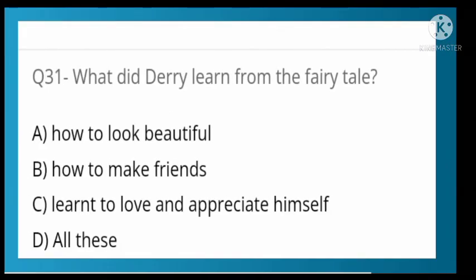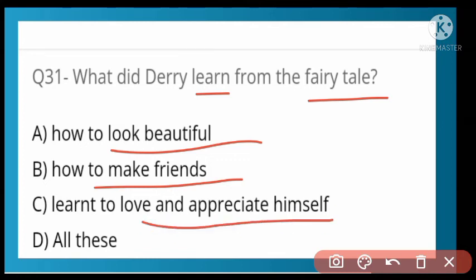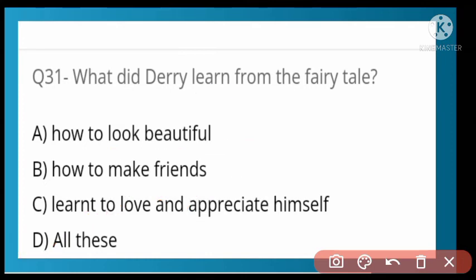What did Derry learn from the fairy tale? Options: how to look beautiful, how to make friends, how to love and appreciate himself, or all of these. Option D is correct — all of these. Derry learned all of these things from the fairy tale.